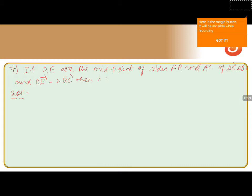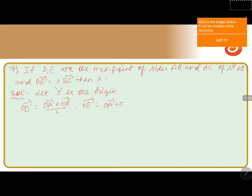Let O be the origin. Since D and E are the midpoints of AB and AC respectively, we can write OD vector equals OA vector plus OB vector by 2, and OE vector equals OA vector plus OC vector by 2.